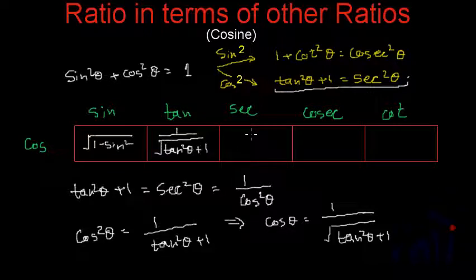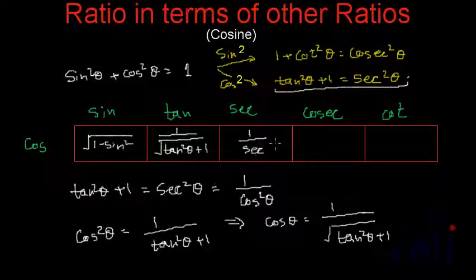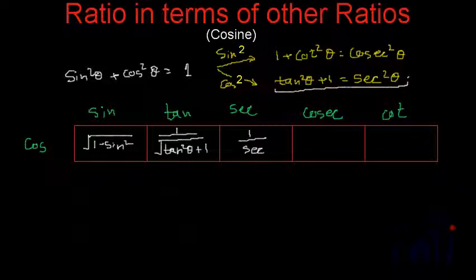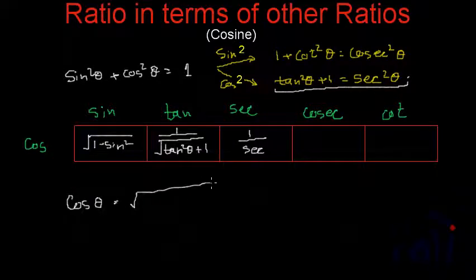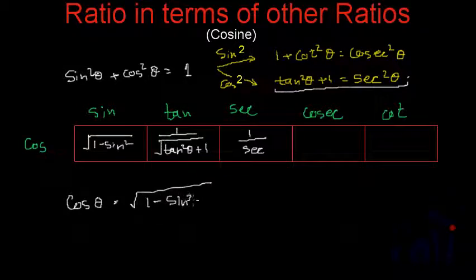Cos in terms of sec theta is simply 1 by sec theta, because cos and sec are reciprocals of each other. And now to convert cos in terms of cosec, we start from cos theta equals square root of 1 minus sine squared theta.